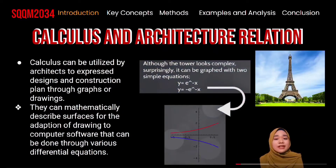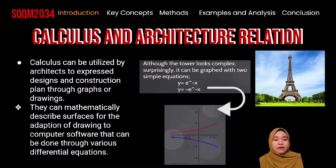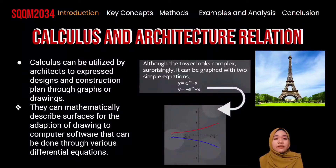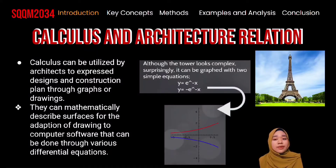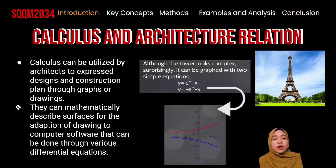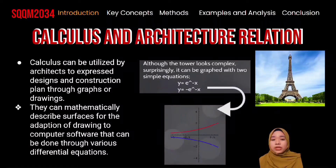The tower is just one example of the result of neglecting the mathematics that goes along with the architecture process. Next, calculus can be utilized by architects to express design and construction plans through graphs or drawings. They can mathematically describe surfaces for the adaptation of drawings to computer software, done through various differential equations. Although the tower looked complex, surprisingly it can be graphed by two simple equations shown in the slide. By using wind as an ally instead of an obstacle, the tower was molded by wind.